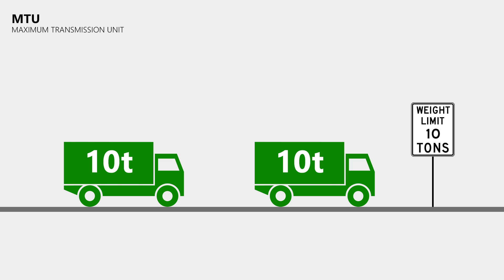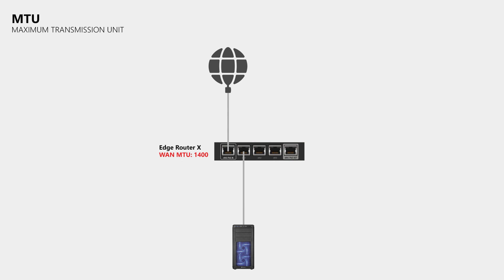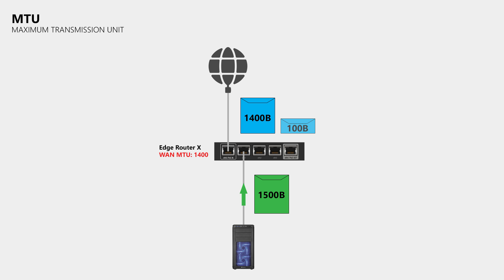The exact same thing happens when an application wants to send a data packet which has 1500 bytes, but the router has an MTU of 1400 bytes. In this case the router must split that packet — it sends one with 1400 bytes and a second one containing the remaining 100 bytes. The receiving host will then reassemble those fragments so that the application or service on the other end can read that data. So the MTU is like that weight limit on a highway: as long as packets stay below that limit they pass right through the router, and when one is larger than the MTU it will get fragmented by the router.